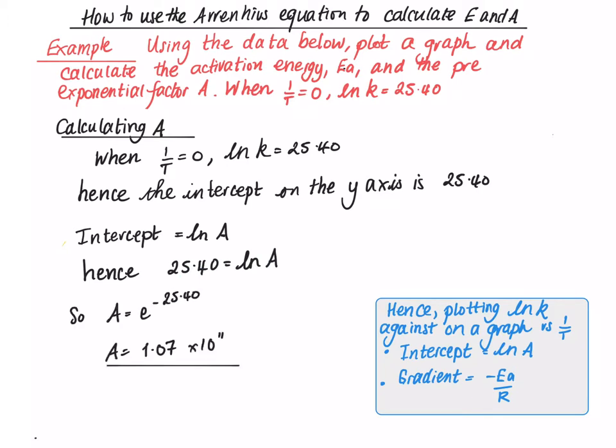Which means if you put it into a calculator, A must be equal to E raised to the 25.4, the antilog of it. So A is 1.07 times 10 to the 11.